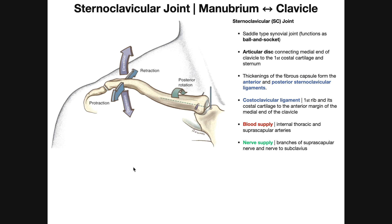Now let's look at the functionality of the sternoclavicular joint. Anatomically, if we neglect the articular disc, the joint is a saddle joint, which should only permit movement in two planes. However, because of the presence of the disc, we have a functional ball and socket with movements in all three planes. What's important is that the SC joint is more or less fixed — the movements occur about the axes at the sternoclavicular joint because the manubrium doesn't move.